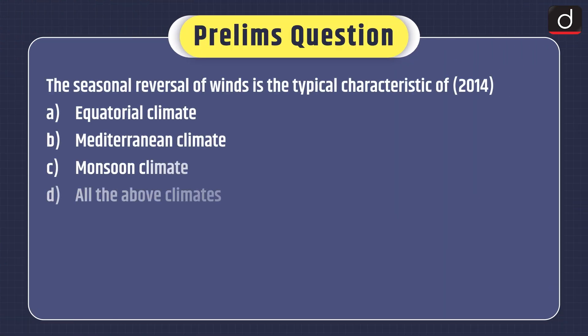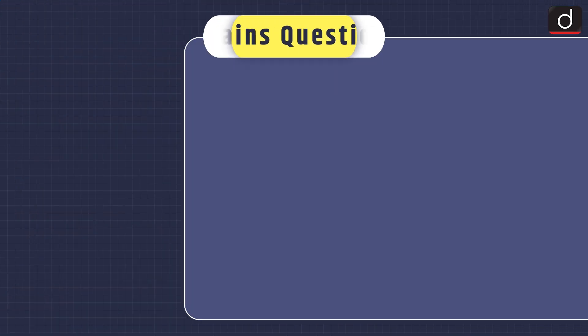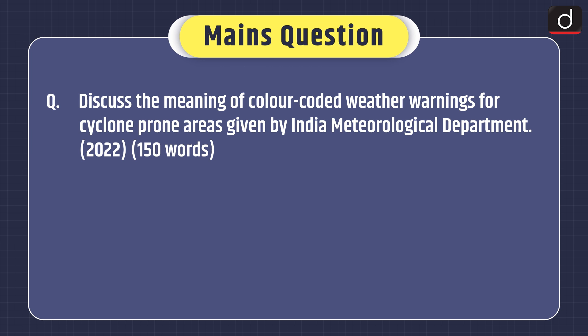Now it's time for practice questions. Prelim question: The seasonal reversal of winds is the typical characteristic of — equatorial climate, Mediterranean climate, monsoon climate, or all of the above climates? Mains question: Discuss the meaning of colour-coded weather warnings for cyclone-prone areas given by India Meteorological Department. That's all for today — stay tuned for the next episode. Thanks for watching.